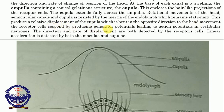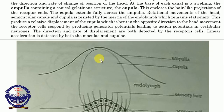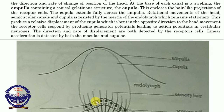This produces a relative displacement of the cupula, which is bent in the opposite direction to the head movement. The receptor cells respond by producing a generator potential leading to action potential in the vestibular neurons. So if the head goes to the right, the endolymph resists and the cupula moves to the left. Movement of the head to the right leads to movement of the cupula to the left, which leads to distortion of the sensory hairs, which is detected and leads to generator potential and then action potential in the vestibular neuron. The direction and rate of displacement are both detected by the receptor cells.